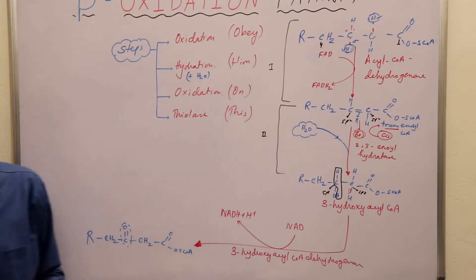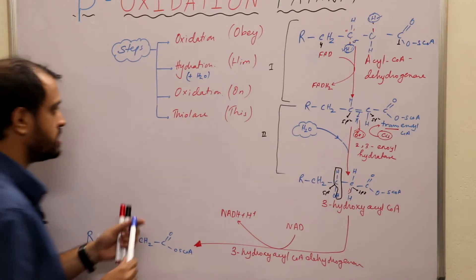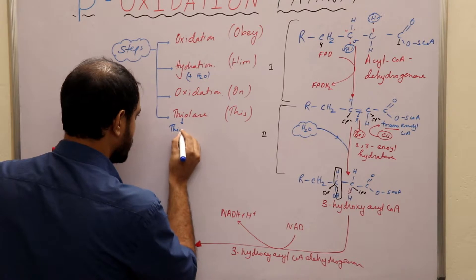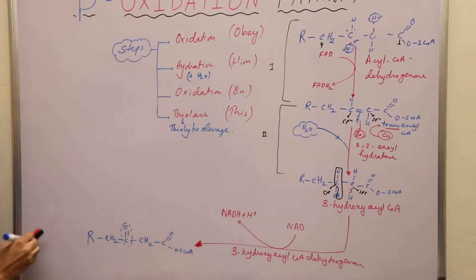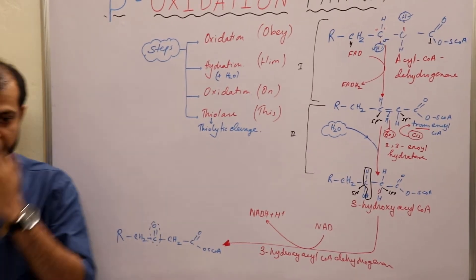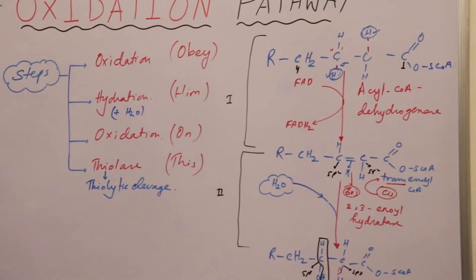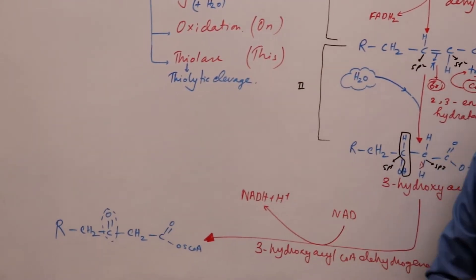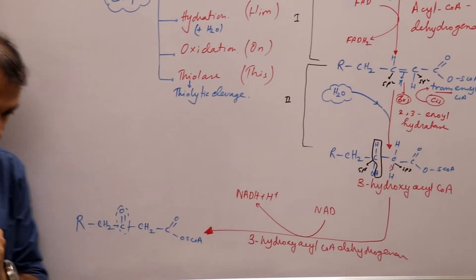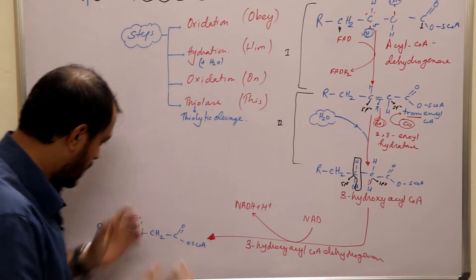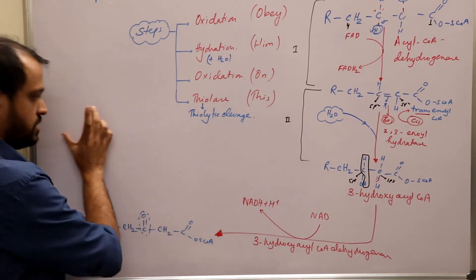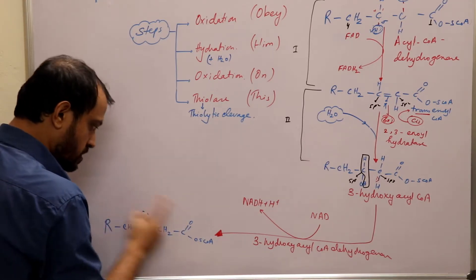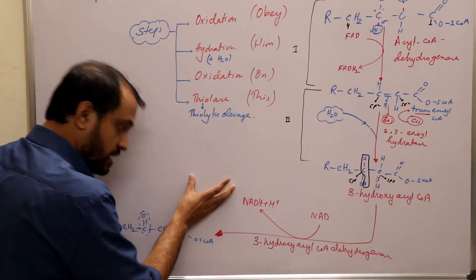The final step is thiolase, also known as thiolytic cleavage. Before we go on with this step, you should understand what a thiol group is and how it can be broken down to give an acetyl-CoA and an acyl-CoA.